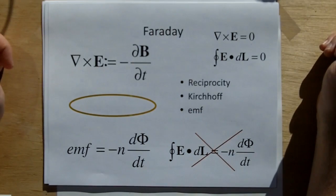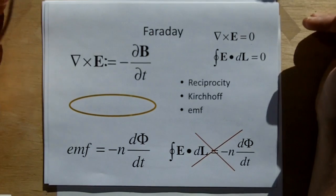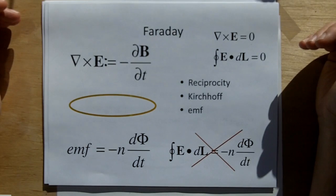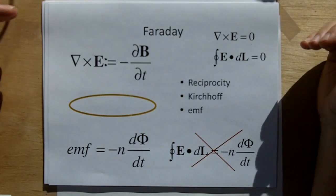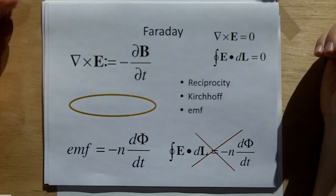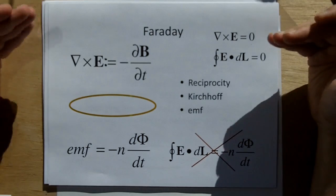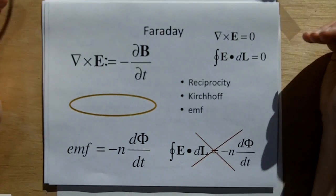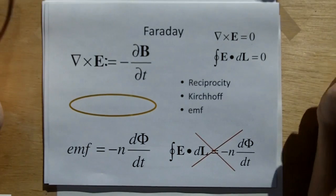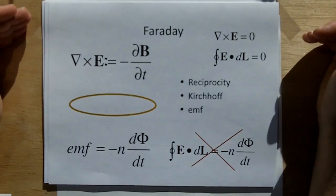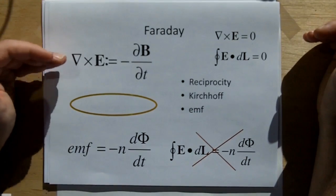Kirchhoff's law in point form is this, in integral form it looks like this. So you cannot have, according to Kirchhoff's law, there is no such thing as a curl of an electric field. And so the curl of an electric field is zero. So if the curl of an electric field is zero, this is a contradiction. And what most professors say, oh well, Kirchhoff's law is only valid for time invariant or static conditions. And I'm like, well, that's not really true.